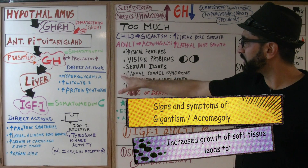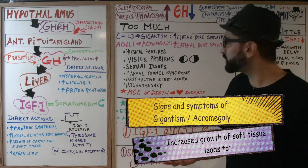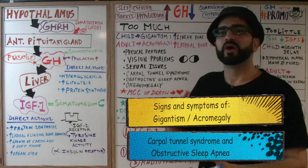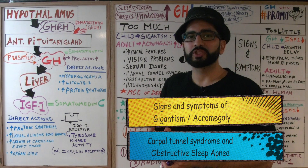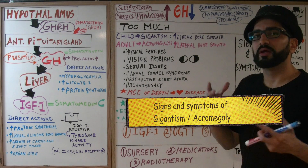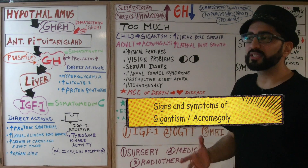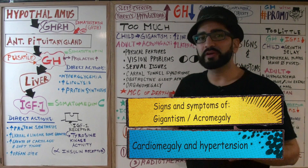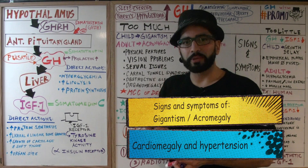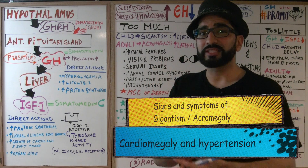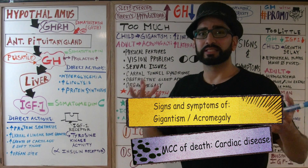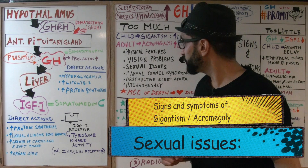Carpal tunnel syndrome and obstructive sleep apnea occur due to excessive soft tissue growth. Organomegaly is also present — the organ of greatest concern is the heart. The patient will develop cardiomegaly and hypertension, and the most common cause of death in these patients is cardiac disease.